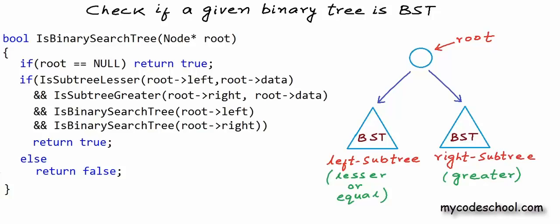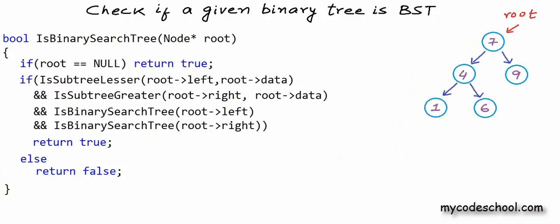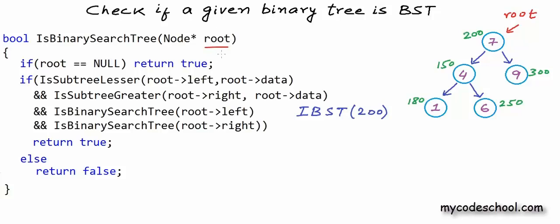Let's quickly run this code on an example binary tree and see how it executes. I have drawn a simple binary tree that is actually a binary search tree. Let's assume the root node is at address 200 with some random addresses for other nodes. We make a call to isBinarySearchTree passing address 200. For this call, root is not null — null is just a macro for address 0 — so we proceed to the next condition.